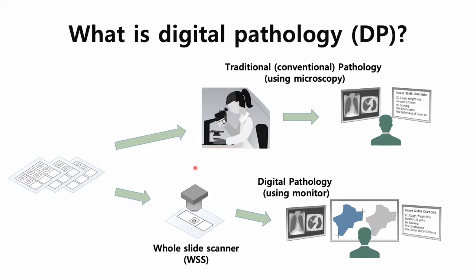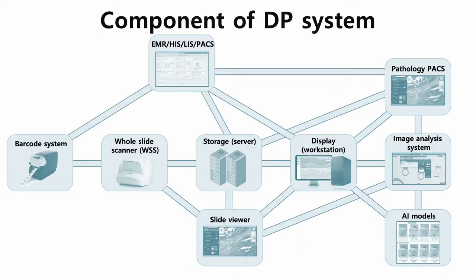So what is digital pathology? As you already know, it is a digital transformation of conventional microscopy-based pathology into monitor-based diagnosis using a whole slide scanner. A digital pathology system consists of a whole slide scanner (WSS), storage that holds the data, and displays that show the image data through a slide viewer or pathology PACS. You can also run image analysis using specialized software and recently AI models that can analyze data and support pathology diagnosis.